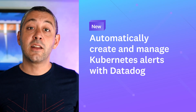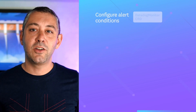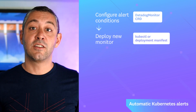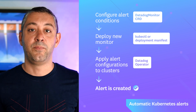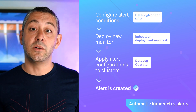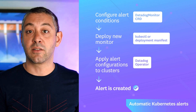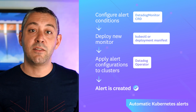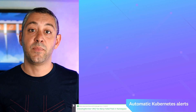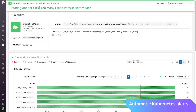Now you can automatically create and manage Kubernetes alerts with Datadog. Monitoring Kubernetes clusters can be challenging, especially as teams deploy services with varying configurations and resources. The Datadog operator now includes a Datadog monitor custom resource definition, allowing you to alert on metrics from nodes, pods, and other Kubernetes resources via both deployment manifests and the kubectl command. This means every team in your organization can now easily create a comprehensive suite of monitors while deploying their Kubernetes services.